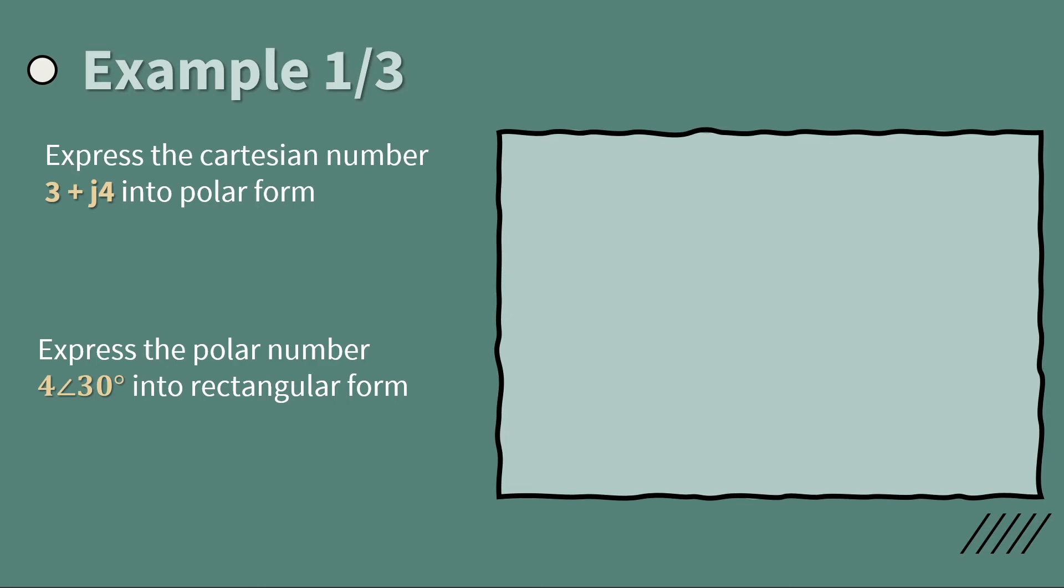Here is the first example of the polar form. We're converting the Cartesian complex number 3 plus j4 to polar form. This is very simple.